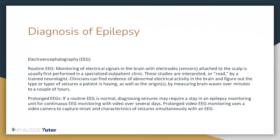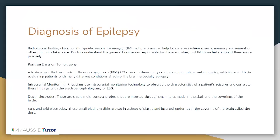Prolonged video EEG monitoring uses a video camera to capture the onset and characteristics of seizures simultaneously along with the EEG. For radiological testing, functional magnetic resonance imaging of the brain can help locate areas where speech, memory, movement, or other functions take place, pinpointing them more precisely through a functional MRI. Positron emission tomography is also a brain scan called an interictal fluorodeoxyglucose PET scan, which can show changes in brain metabolism and chemistry — valuable in evaluating patients with conditions affecting the brain, especially epilepsy.